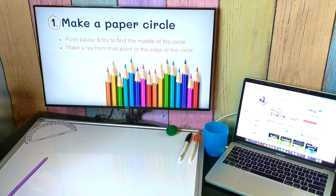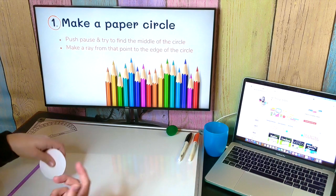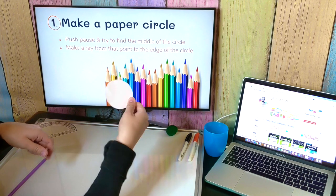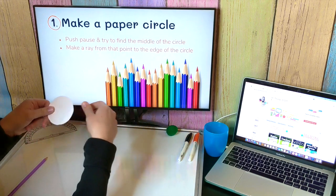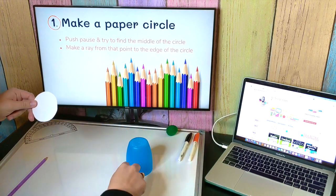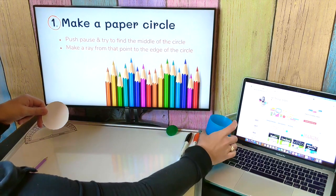Okay, so first things first, what I want you to do, and you can pause the video in order to do this, is I want you to make a paper circle just like mine. It's very easy to do. All I chose to do was I found a little cup, turned it upside down on a piece of paper, drew my circle and cut it out.